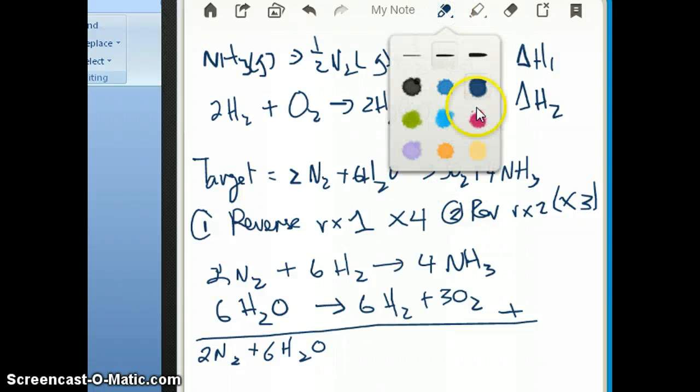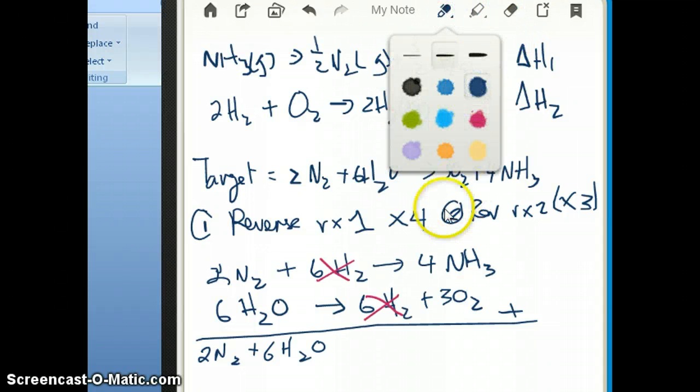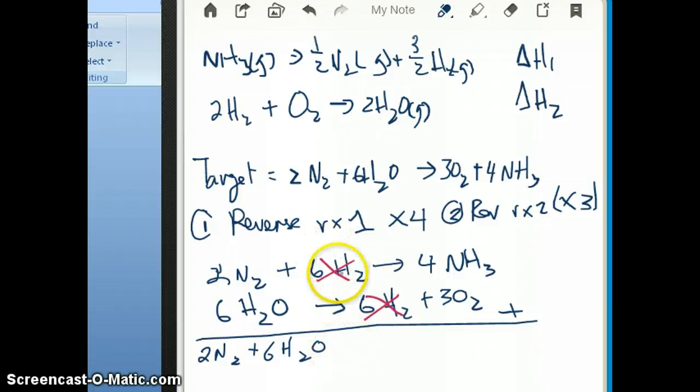And so what that means is you have the same species on both sides. And if you remember back when we're doing net ionic equations, when we have that type of situation, they are canceled out because we consider them not to really participate in the reaction. So this is the same idea here. Anytime you have the same species on both sides, they cancel. And in this case, they are the same number, so all of it cancels out. So then what you're left with on the product side is just 4NH3 plus 3 oxygen. If you look at this reaction that I just wrote down, it's exactly the target reaction that I'm looking for. So I can start calculating the actual value of delta H.